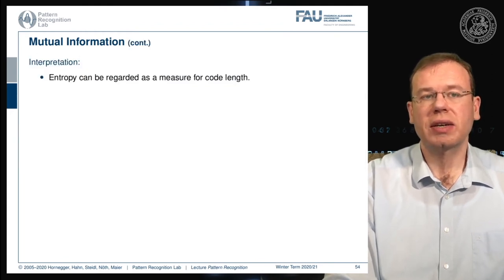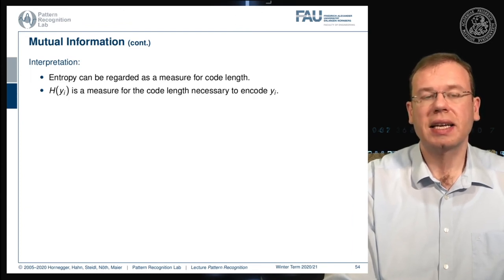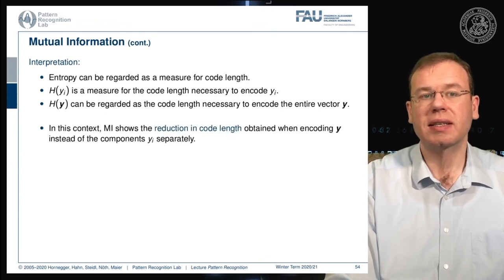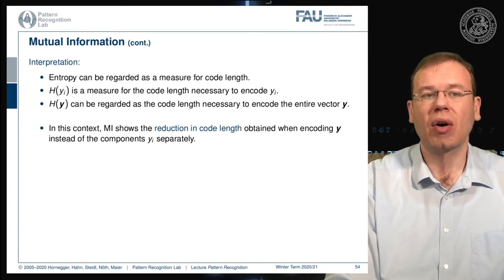Entropy can be interpreted as a measure of code length: H(Yi) is the code length needed to encode Yi, and H(y) is the code length to encode the entire vector y. In this context, mutual information represents the reduction in code length obtained when encoding y jointly instead of encoding the components Yi separately.